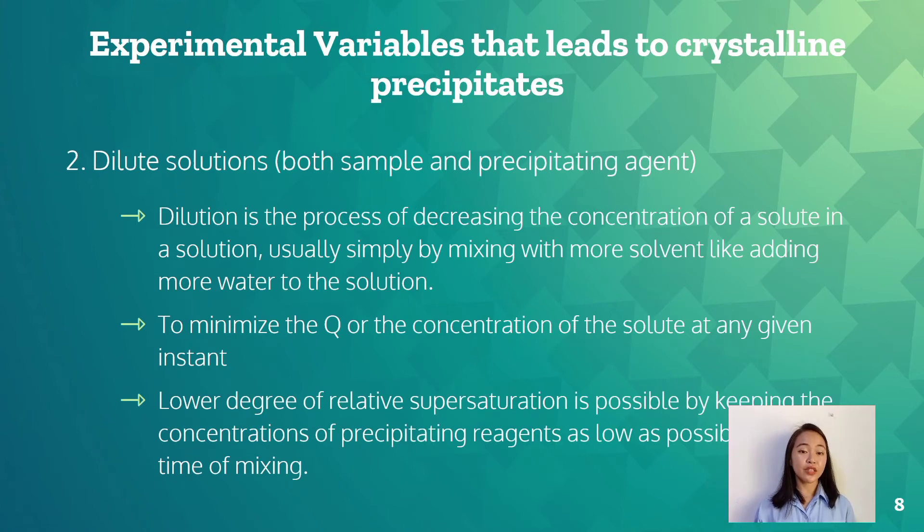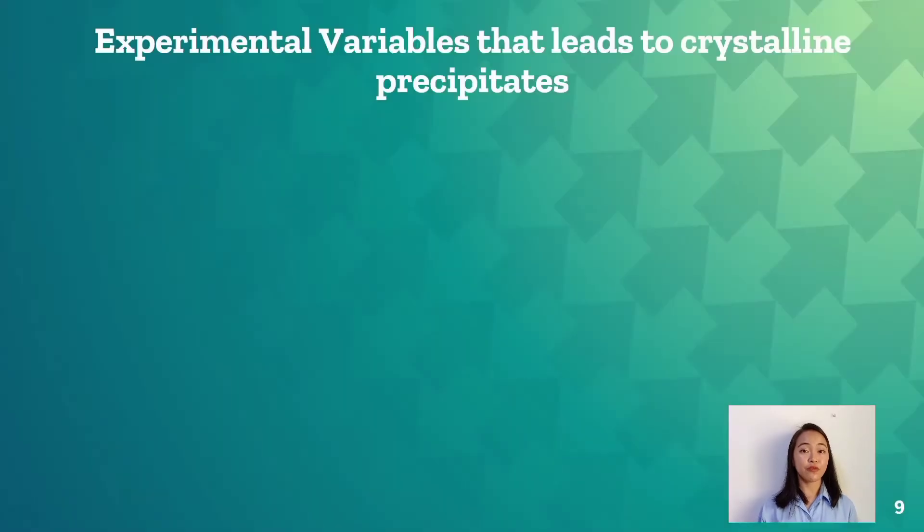Lower degree of relative supersaturation is possible by keeping the concentrations of precipitating reagents as low as possible at the time of mixing.